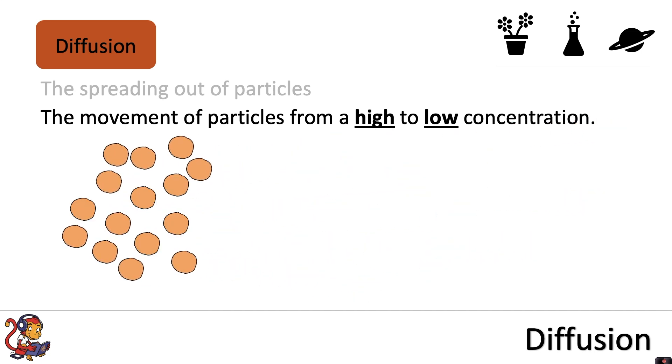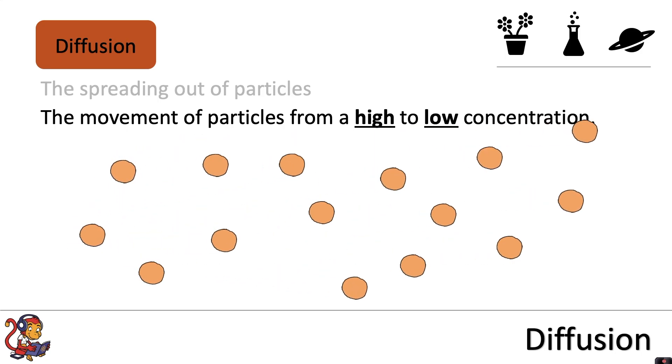For example, if you were to spray some perfume at one end of a room, you'd have a high concentration of particles just after you sprayed, but gradually those particles will spread by diffusion across the room.